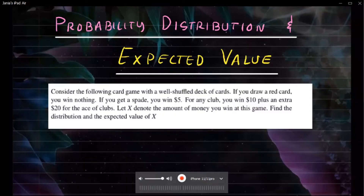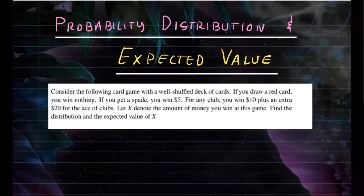Let's go ahead and work out this problem. We're going to find the probability distribution and expected value for this random variable X. We'll consider the following card game with a well-shuffled deck of cards.